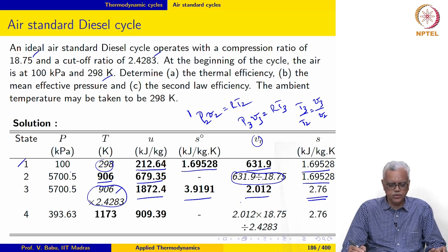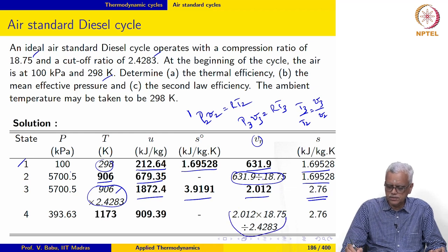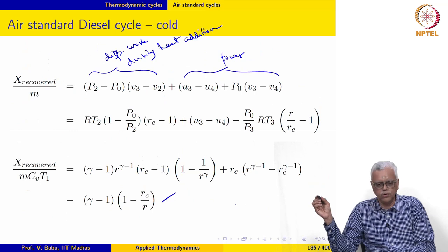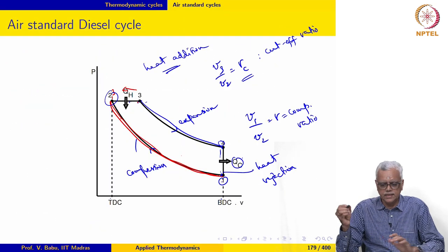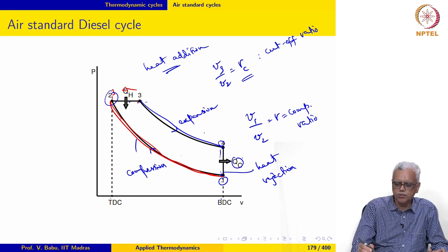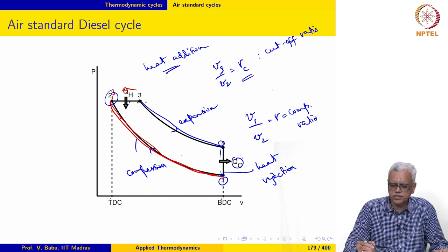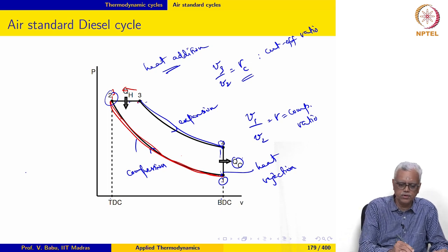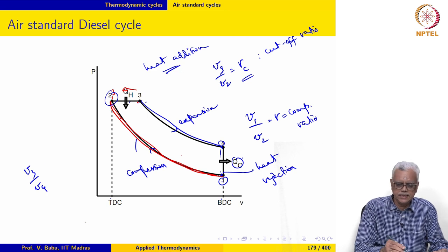Now, for state 4, we evaluate Vr like this. Notice that for state 4, the compression ratio is V3 over V4. For the expansion process, the compression ratio is V3 over V4.